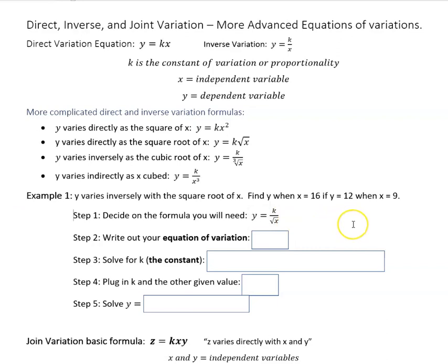So you can always try these before I uncover them and see if you do that correctly. But it should be y equals k over square root of x. Next you're going to write your equation of variation, and that just means you're going to plug in those numbers that you were given.